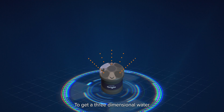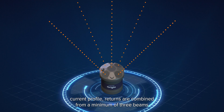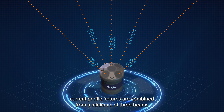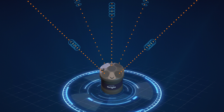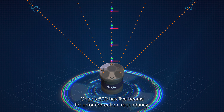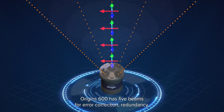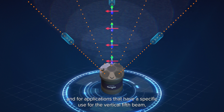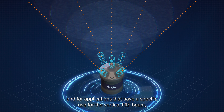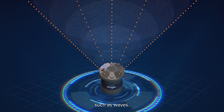To get a three-dimensional water current profile, returns are combined from a minimum of three beams. The Origin 600 has five beams for error correction, redundancy, and for applications that have a specific use for the vertical fifth beam, such as waves.